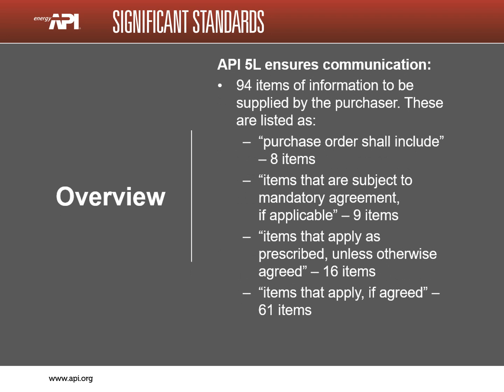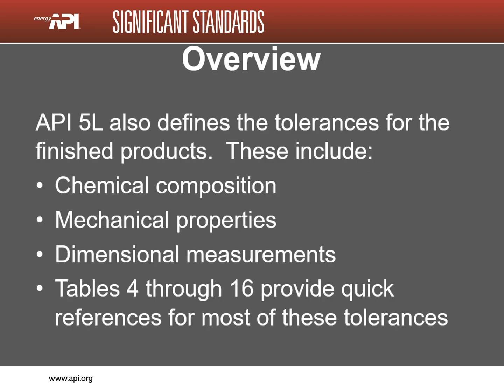API 5L ensures communication between the purchaser and the manufacturer. Paragraph 7 of the document lists 94 items of information that are to be supplied by the purchaser. These are itemized to make sure that there is clear understanding of the requirements for the product that is being ordered. Many of the requirements for an order are determined when the description of the product is defined. API 5L defines the tolerances on the finished products including chemical composition, mechanical properties, and dimensional measurements.